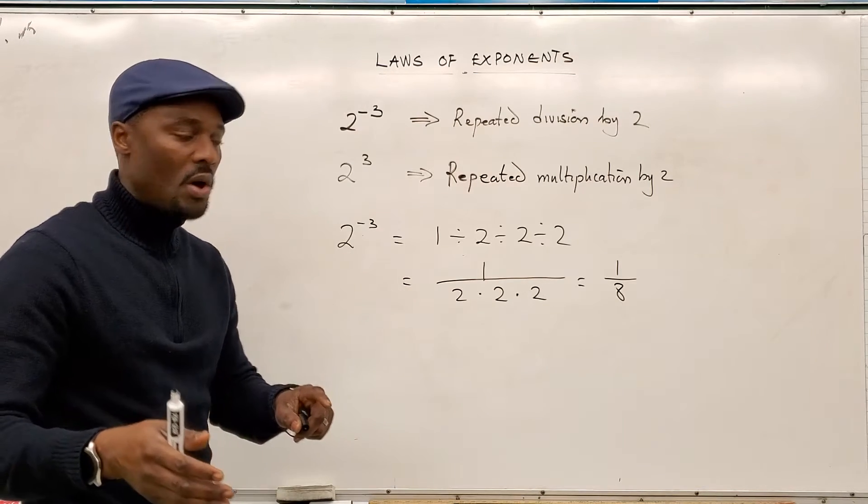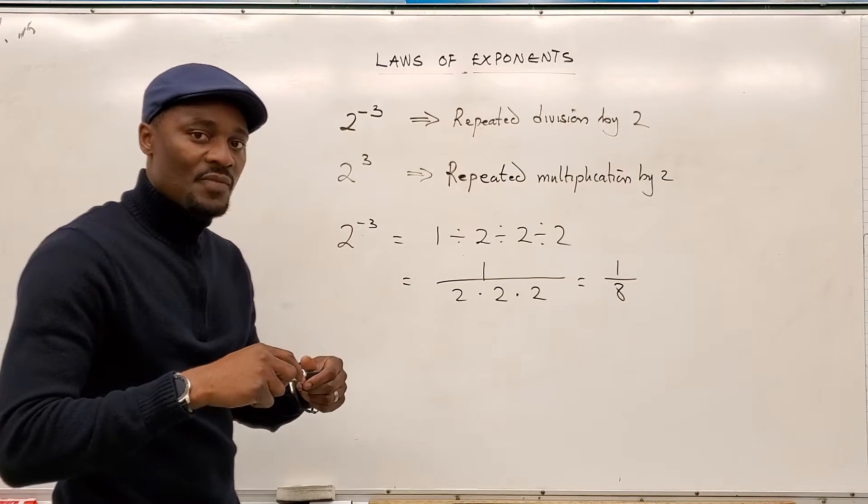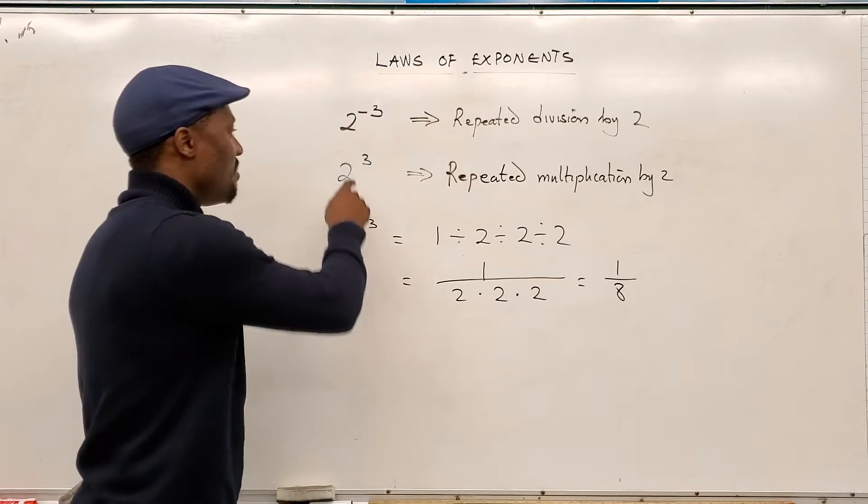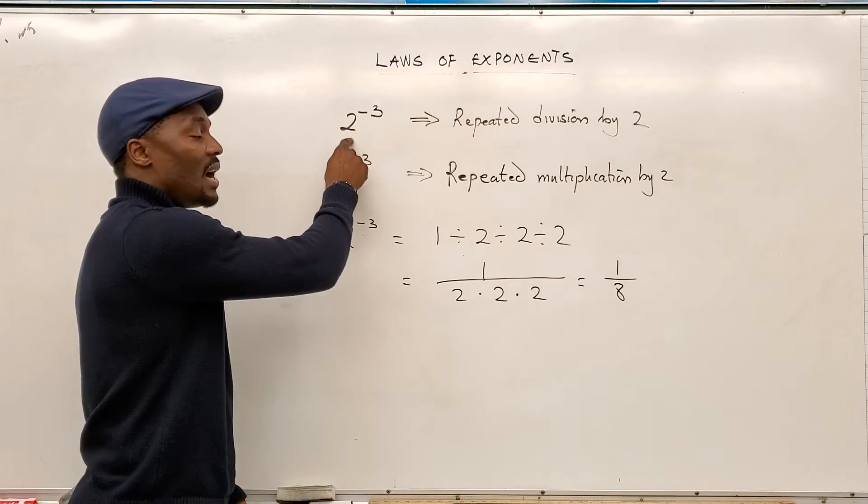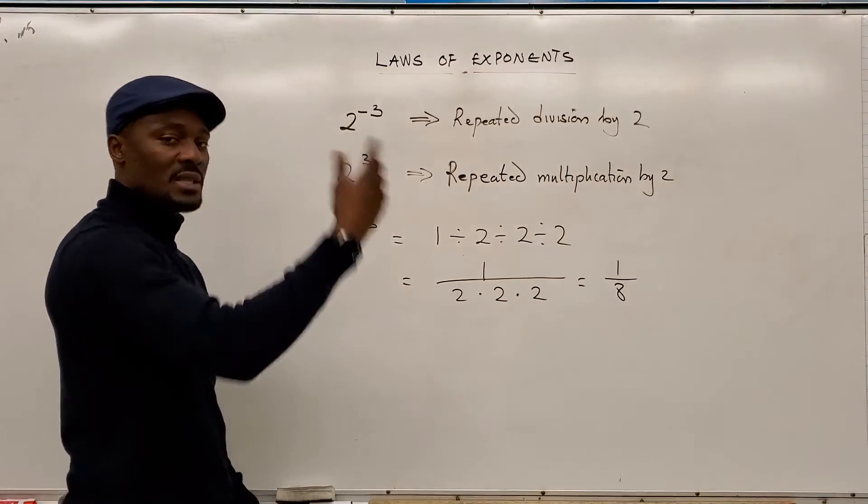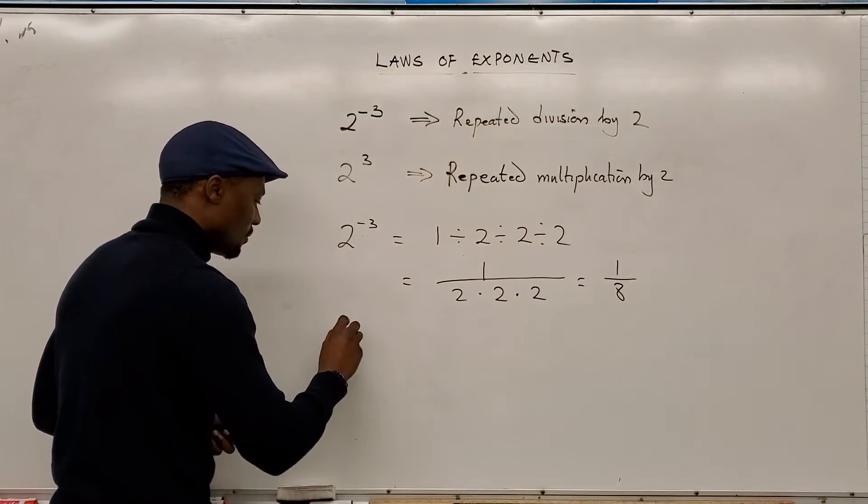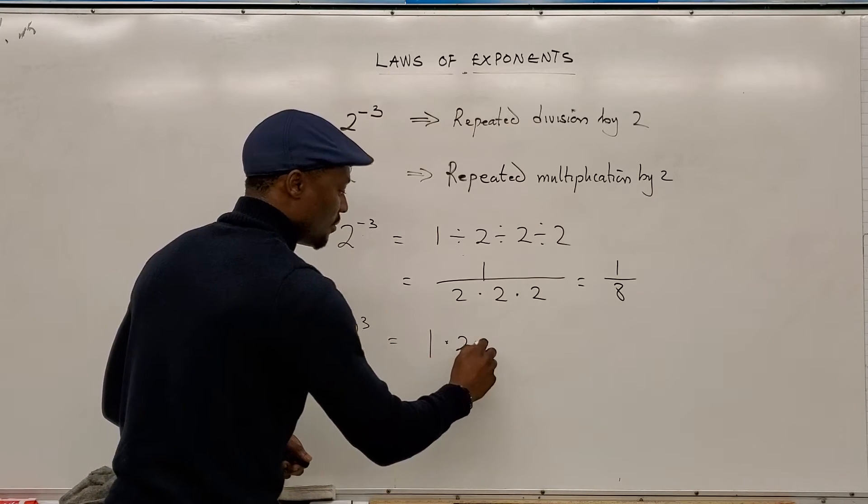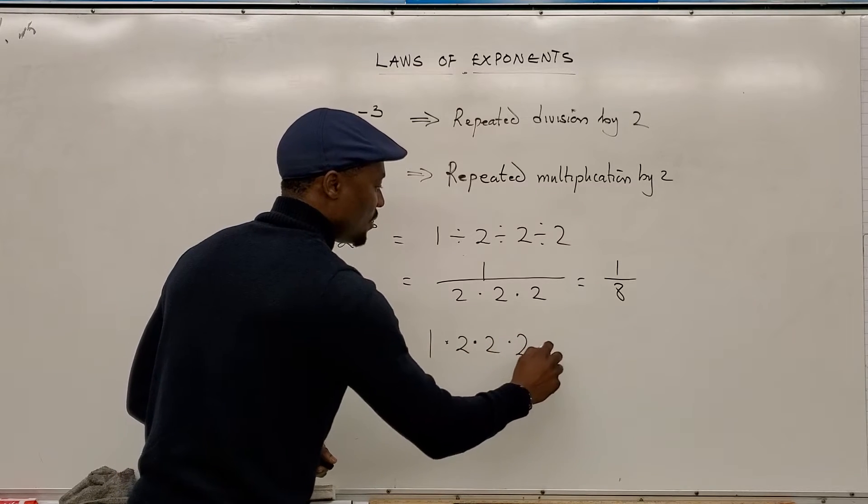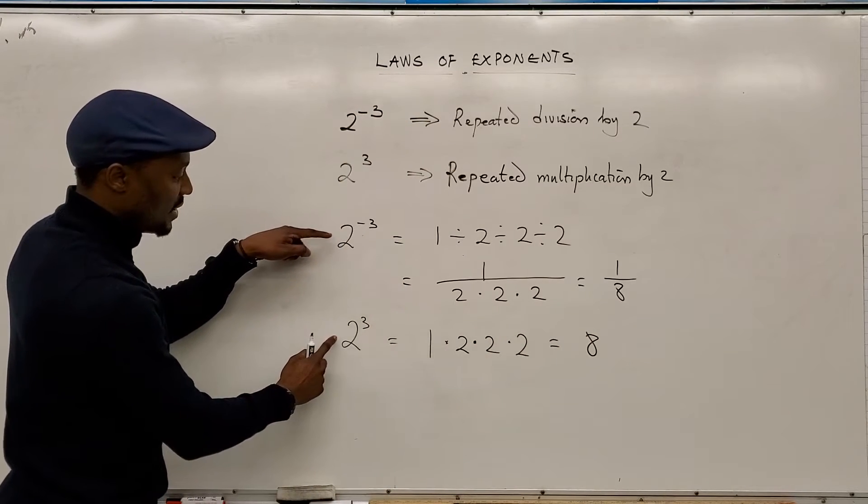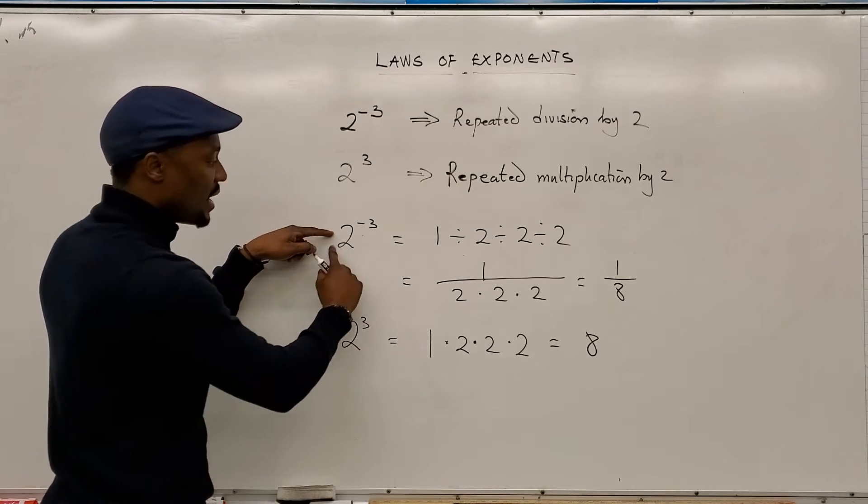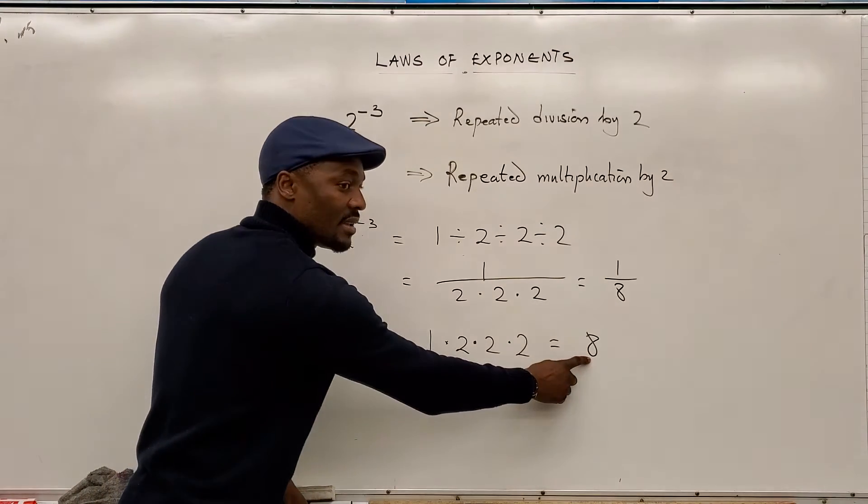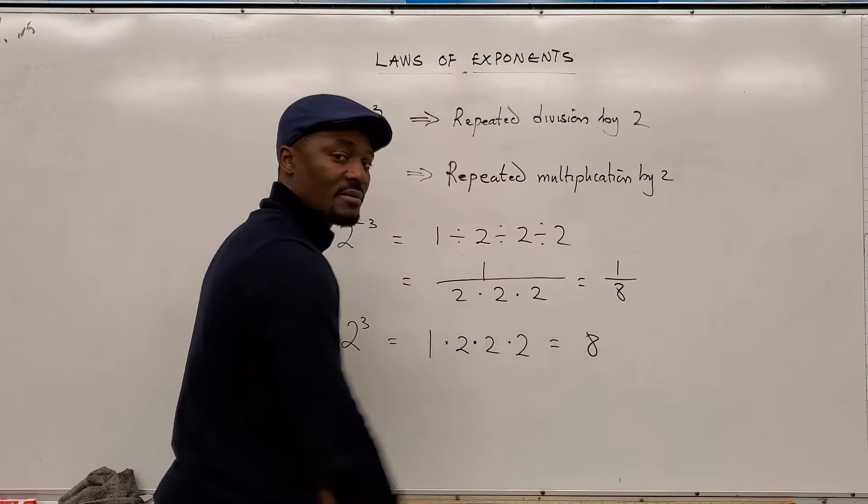We're going to get to one of the laws that helps us do this. But remember this, that when the exponent is a negative number, you are dividing by the base. You are not multiplying, you are dividing. But if it is positive, it is repeated multiplication. So, 2 to the 3rd power will be 1 multiplied by 2, multiplied by 2, multiplied by 2. Your answer is going to be 8. So, the difference between 2^-3 and 2^3 is that one is a division, and the other one is a multiplication.